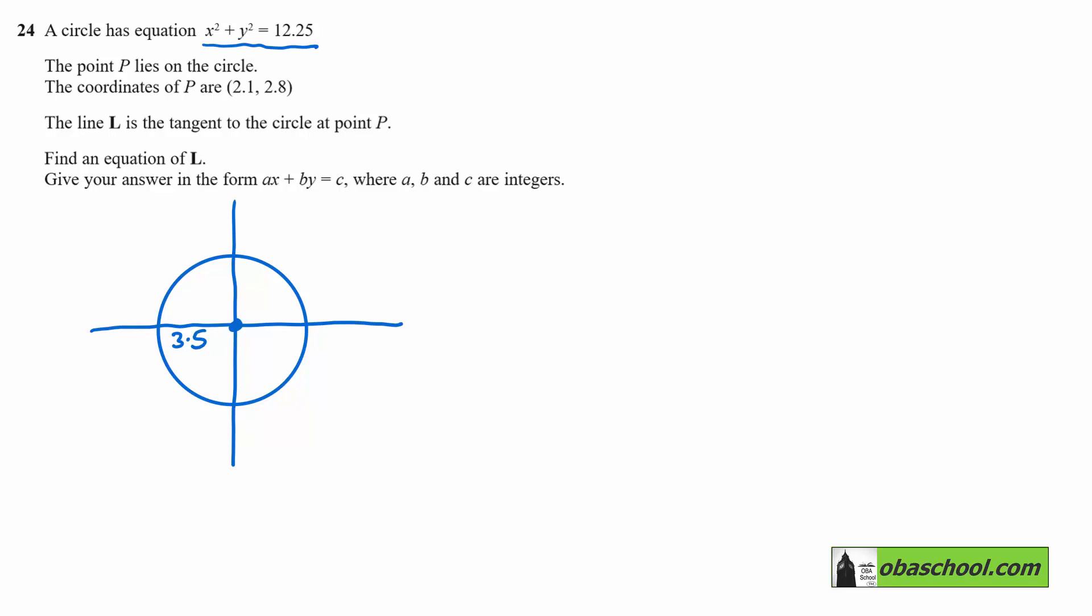The coordinates of P on the circle are (2.1, 2.8). The line L is a tangent to the circle at point P. We want to find the equation of L.